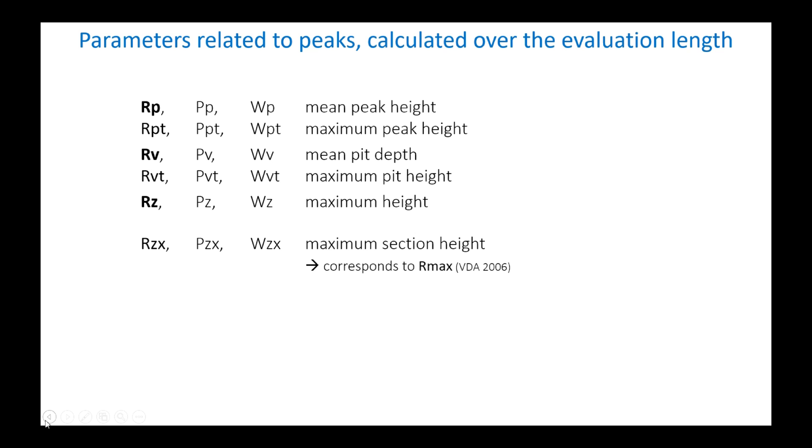We saw earlier that the parameters were now defined over the evaluation length. There is, however, an exception with parameters related to peaks and pits, such as RP, RV, or RZ. As these parameters identify extreme points of the profile, they are very sensitive to outliers. In order to reduce this influence, they are still calculated by average. The sampling length is replaced by the notion of section length, which is defined differently depending on whether we are on the primary profile or a filtered profile.